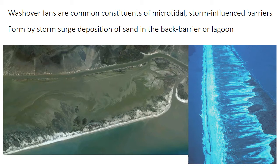The storm surge crests over the island in big storms, particularly hurricanes, and deposits a thin lobe or sheet of sand into the back barrier or even into the lagoon environment. The sand sheet will thin towards the lagoon, likely consisting of high-energy sand with planar laminations, and will inter-finger with the lagoon sediments — just like the inter-fingering of washover with the central basin sediments in an estuary.